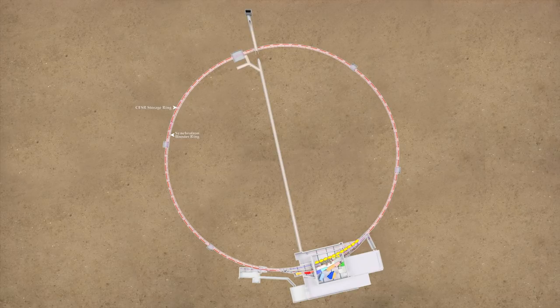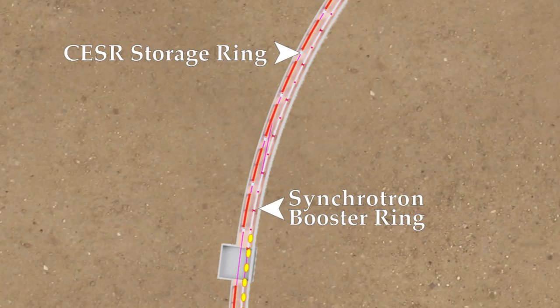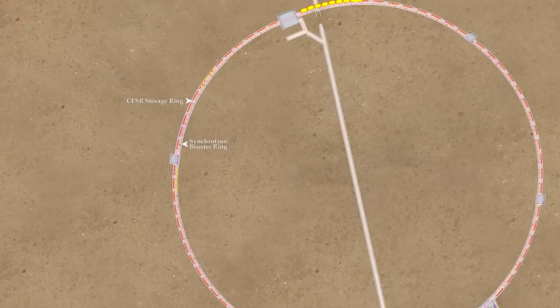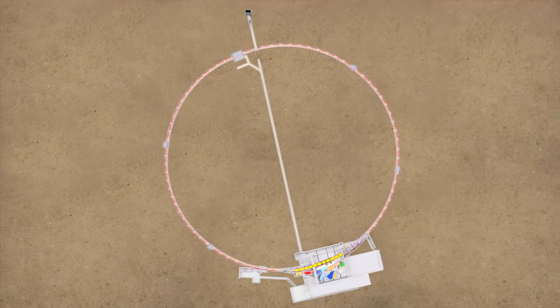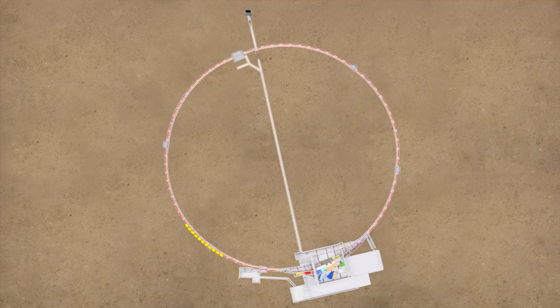When the positrons reach the desired energy, bunches are transferred into the particle superhighway, the Cornell Electron Storage Ring, CESAR. Electromagnets steer and focus these particles into a circular path while waves push them like surfers on the ocean. In CESAR, they travel around the half-mile ring at a rate of 400,000 times every second.